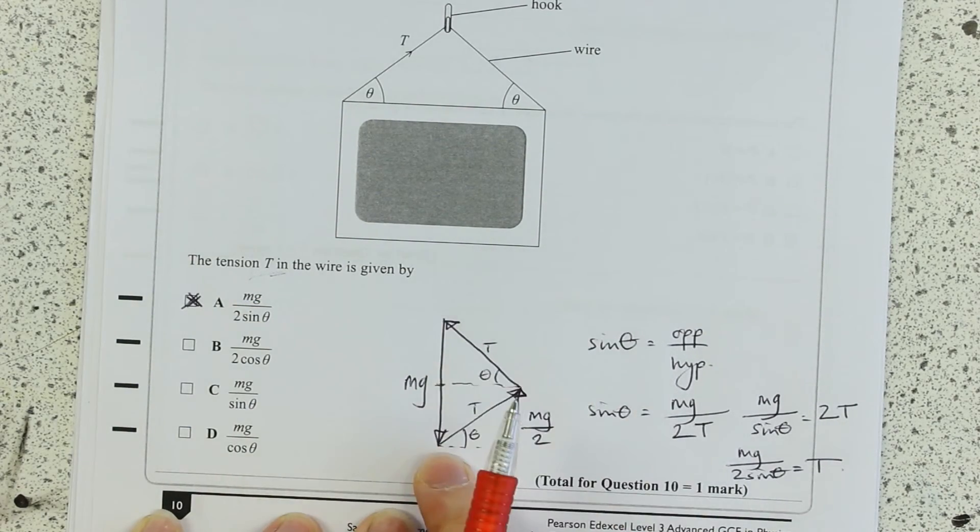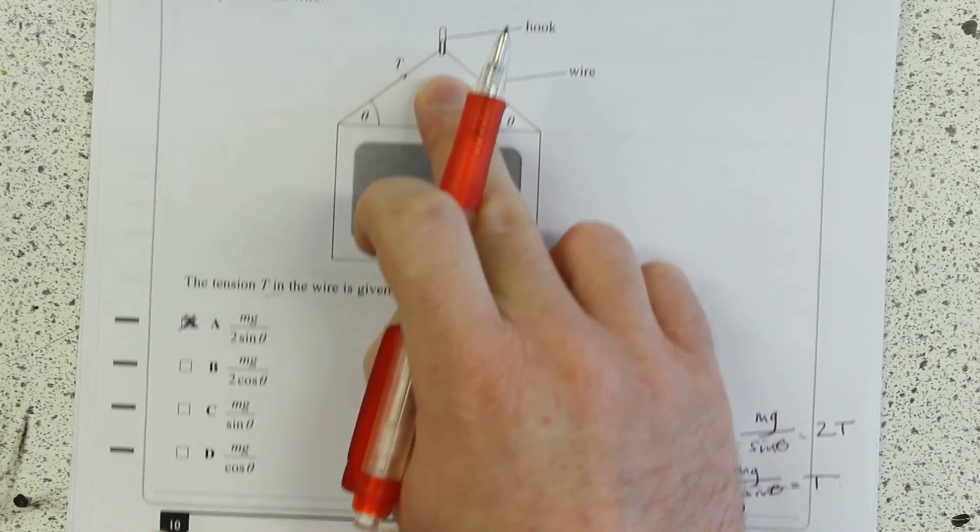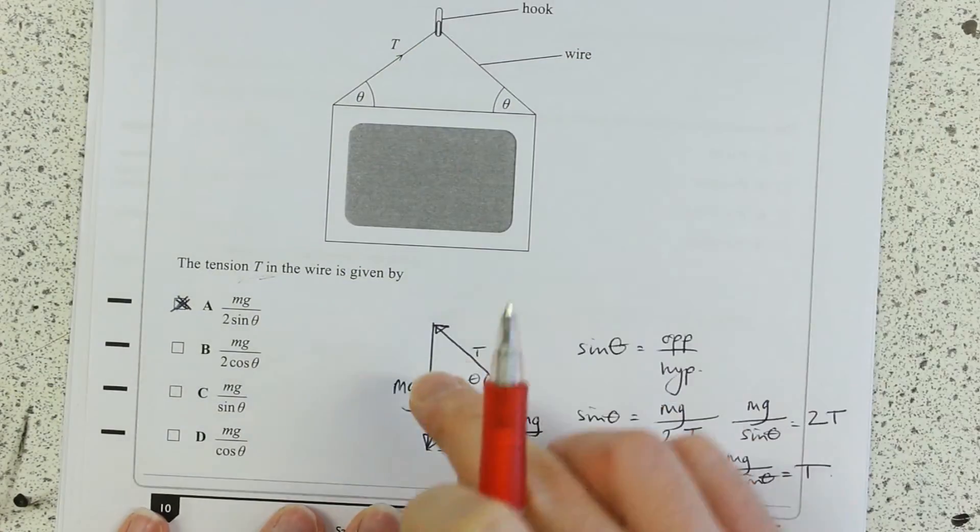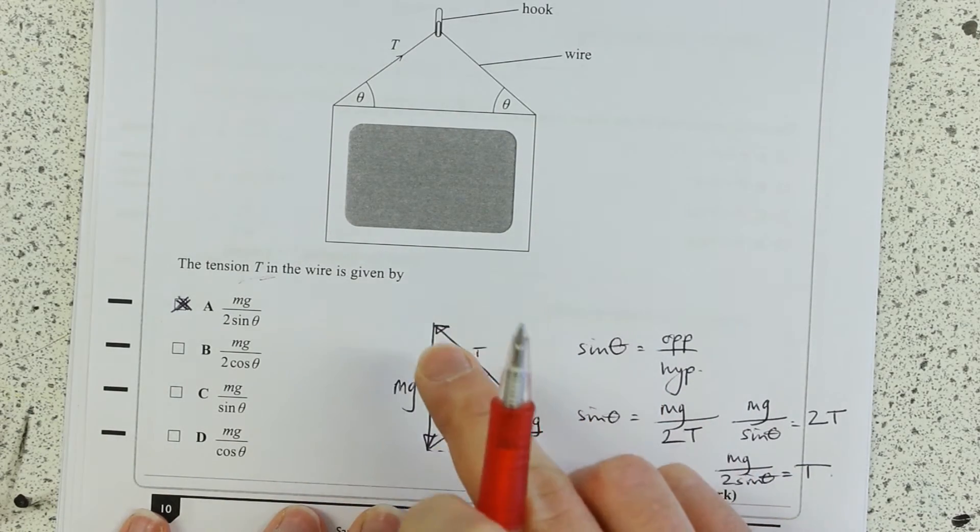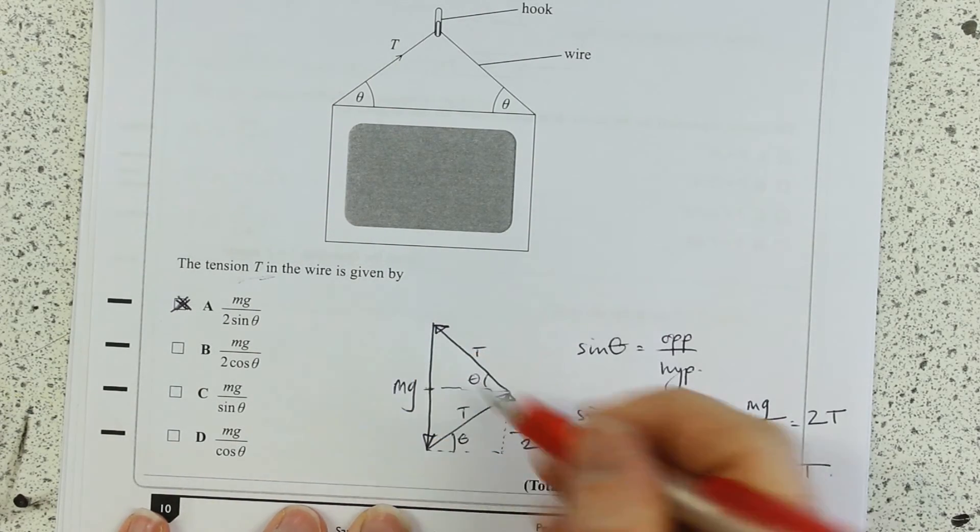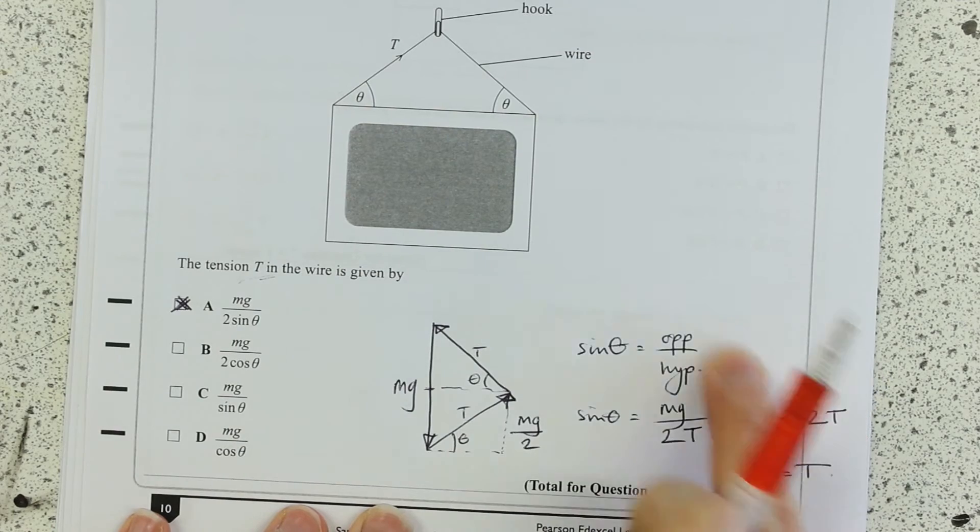Okay, a nice one for remembering if something is in equilibrium, you can draw a vector triangle, which is going to close. Okay, and then thinking from there, where's my trigonometric relationship?